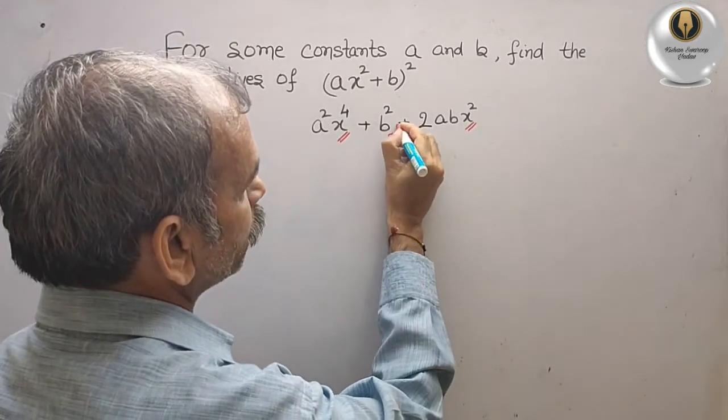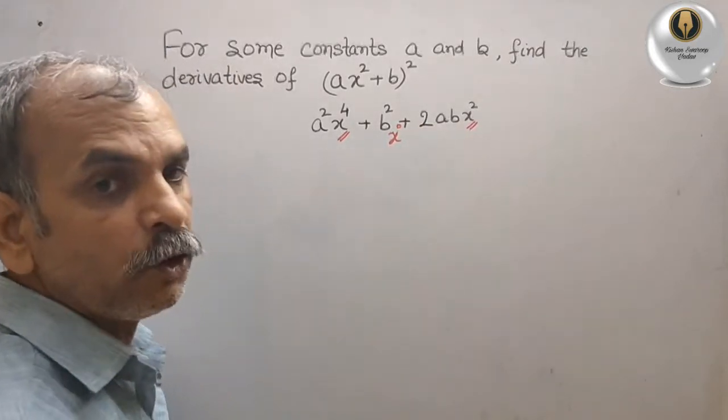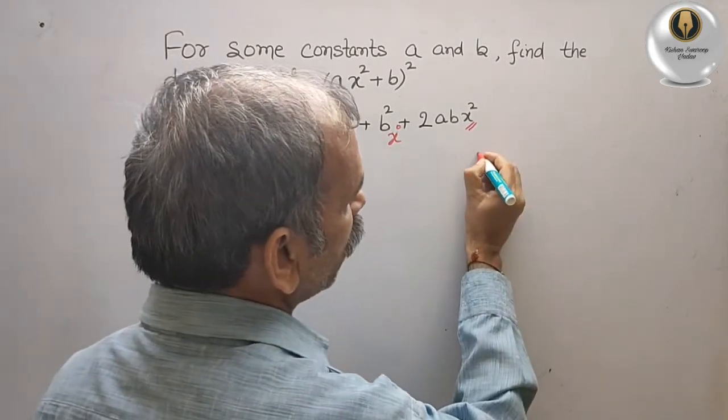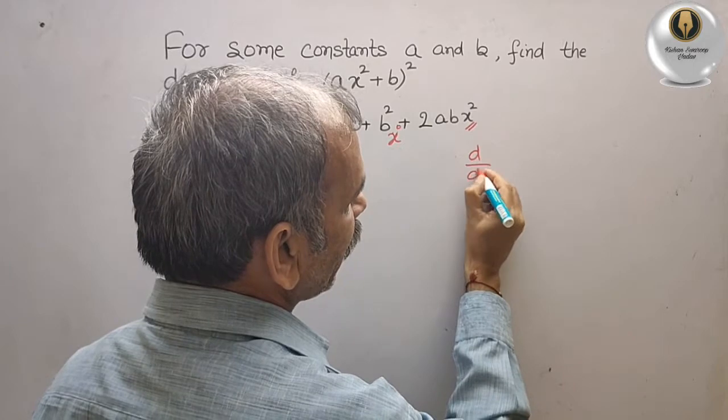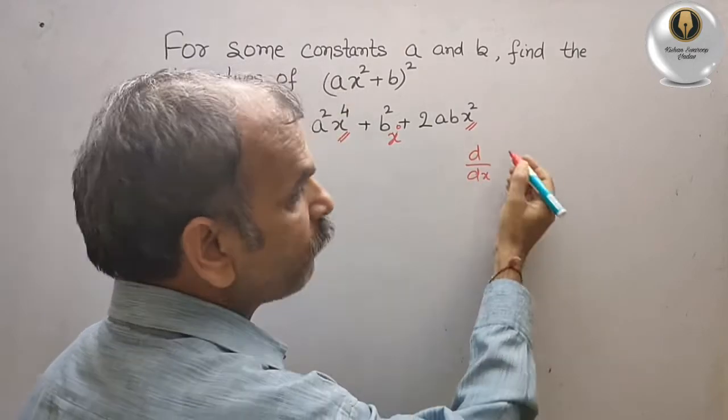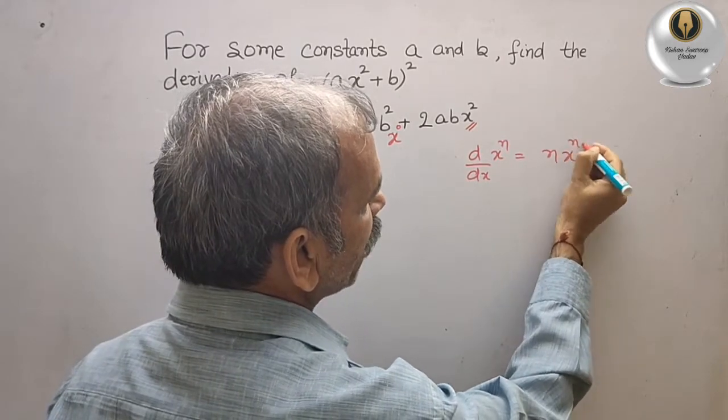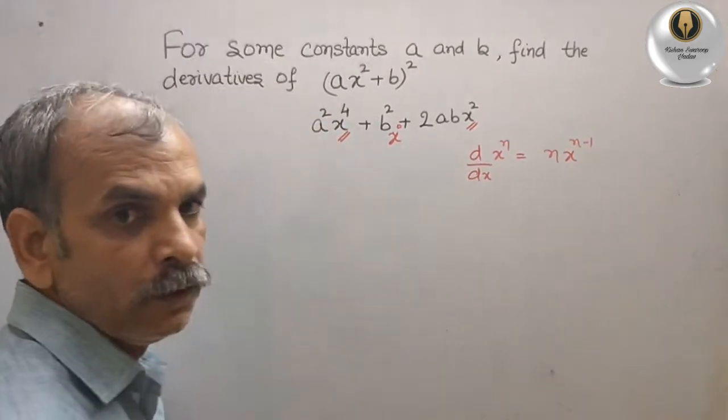Now we got the powers, so we have a formula. What is that formula? That is d/dx derivative of x to the power of n is equal to n·x^(n-1).